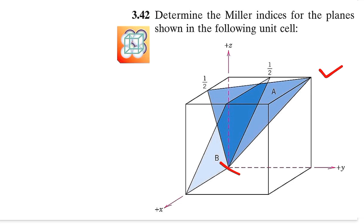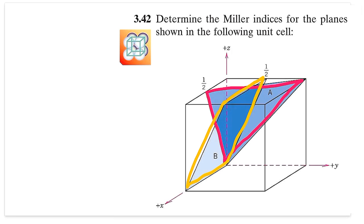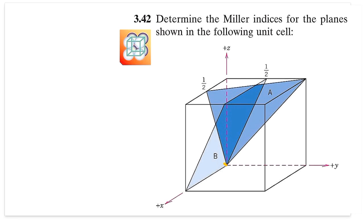Now let's use these steps to find the Miller indices of the planes shown. We have two different planes: plane A in dark blue and plane B in light blue. You should be able to identify the boundaries of each plane — this comes with practice. We can see the predefined x-axis, y-axis, and the z-axis pointing vertically upward, along with the predefined origin.